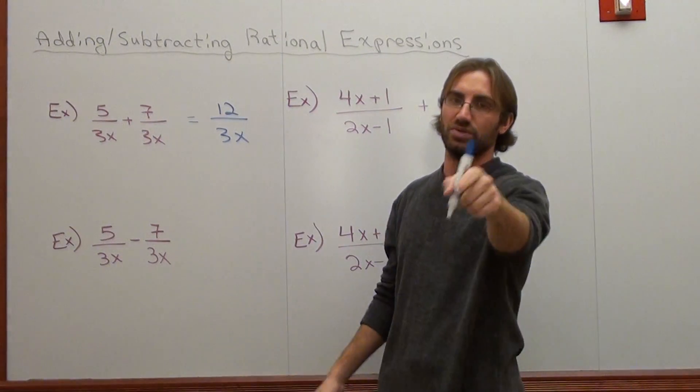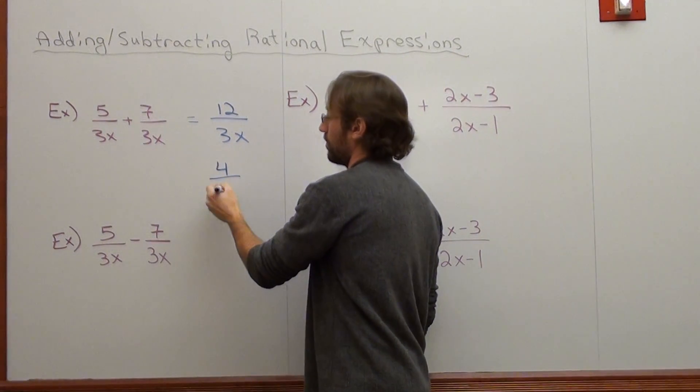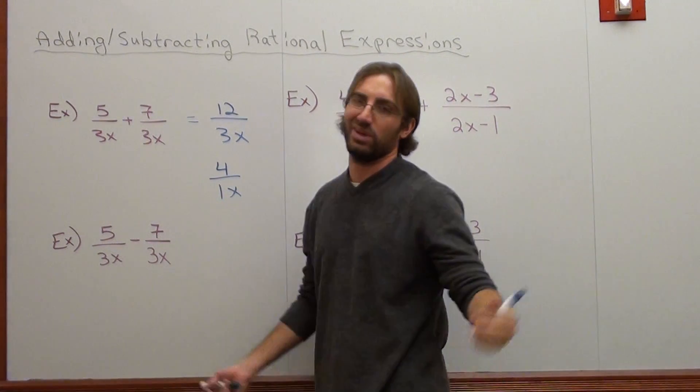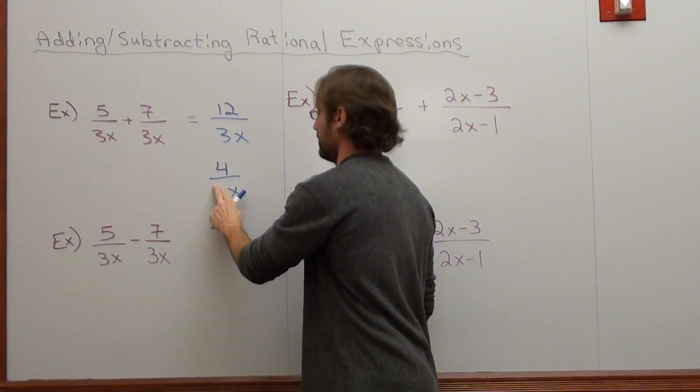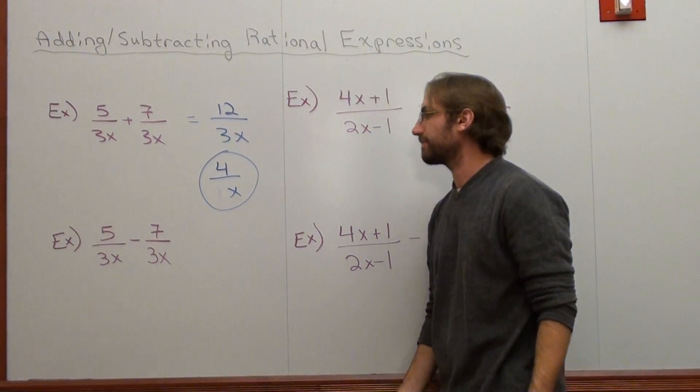Uh-oh, 12 over 3x does reduce. 12 over 3 is 4 over 1x. You don't really need 1x. 4 over x will suffice. And you can divide them because it's one term divided by one term. Done.